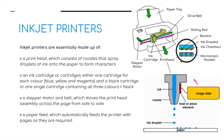How does the inkjet printer work? It has a printhead on a sliding rod moving up and down a drive belt. The printhead consists of nozzles that spray droplets of ink onto the paper to form characters. The ink is usually cyan, yellow, and magenta, plus a black cartridge, or a single cartridge with all four colors. A stepper motor and belt move the printhead across the page from side to side, squirting out the ink. A paper feed at the top gravity-feeds the paper through the printer. The ink passes through the nozzle, is heated, and the ink droplets go onto the page to form the image or text.